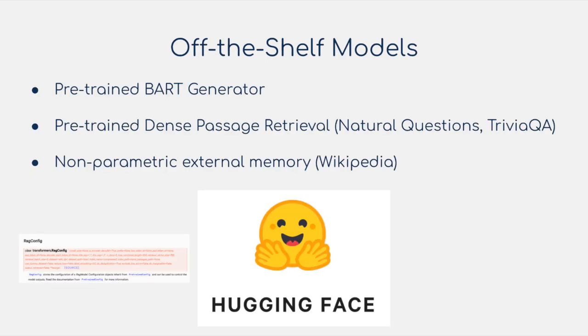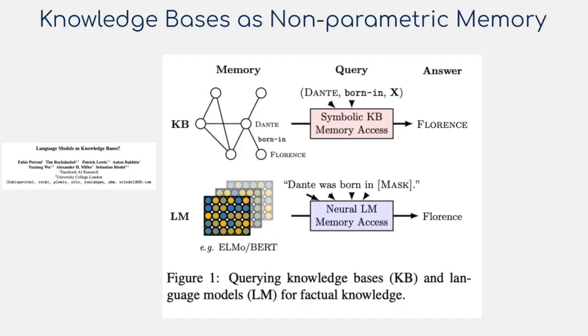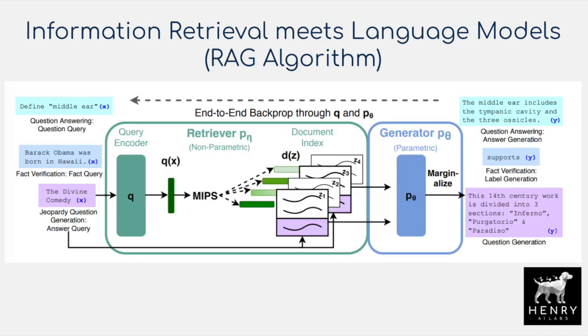It's also interesting to see the modularity of this algorithm. The authors use a pre-trained document index and query encoder integrated with a pre-trained BART generator, and you can also imagine swapping out the non-parametric external memory source — in this case Wikipedia — with something like a knowledge graph, or a hybrid structured and unstructured external knowledge source. This video will explain the components of this retrieval augmented generation algorithm, the datasets it's tested on, and some interesting characteristics of these models compared to closed-book language models.